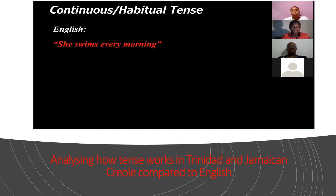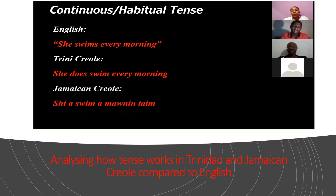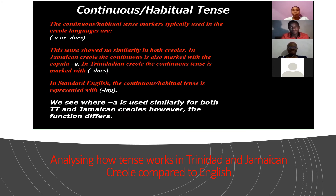The last sentence for continuous habitual tense is: 'She swims every morning.' Trinidadian: 'She does swim every morning.' Jamaican: 'She ah swim her morning time' — it's a habit she does, so 'she swim her morning time.' The continuous habitual tense markers typically used in the Creole languages are 'ah' and 'does.' This tense shows no similarity between both Creoles as they are quite different. In Jamaican Creole the continuous is marked with the copula 'ah'; in Trinidadian Creole it is marked with 'does.' In Standard English the continuous habitual is represented with '-ing.'